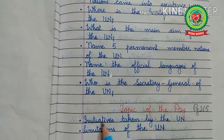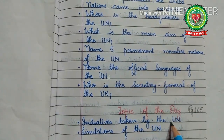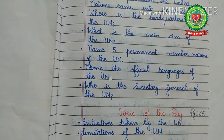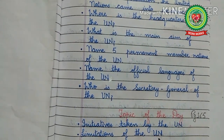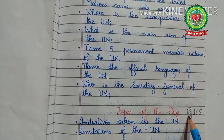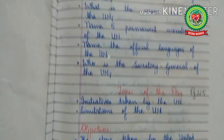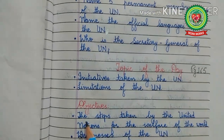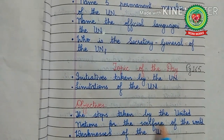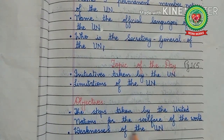The topic of the day: we are going to discuss the initiatives taken by the UN — that means the steps taken by the UN for the welfare of the world — and secondly, the limitations of the UN, that means the weaknesses or drawbacks of the United Nations, from page 165 of the book. The objectives: you will come to know about the steps taken by the UN for the welfare of the world, and about the weaknesses of the UN.